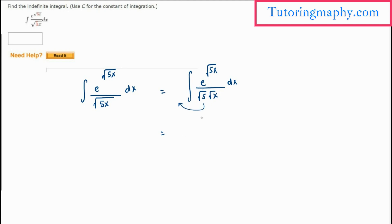Root 5 is a constant which can be pulled out, so it becomes 1 over root 5 times the integration of e raised to root 5x over root x dx. That's where the substitution comes in.